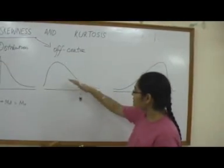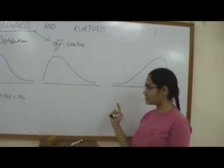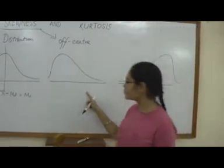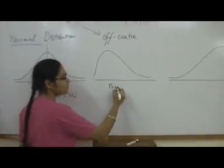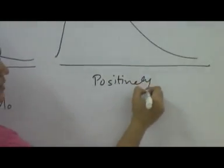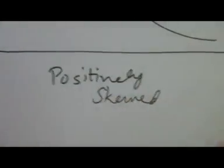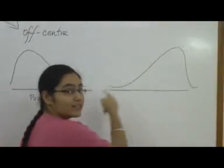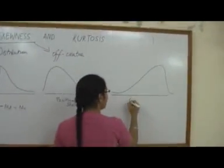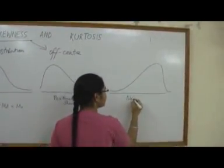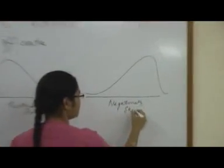In this case, the tail points towards the positive direction of the x-axis. So this kind of distribution is known as a positively skewed distribution. While this one, because the tail points to the left, to the negative x-axis, this is known as a negatively skewed distribution.